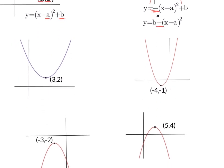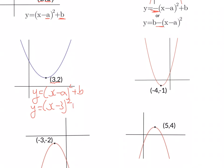The first one we've got here is turning point (3, 2). It's a happy curve, so it's going to be of the form y = (x - a)² + b. The x-coordinate goes inside the bracket and changes sign, so 3 becomes negative 3. The y-coordinate goes outside the bracket. So, it is y = (x - 3)² + 2.